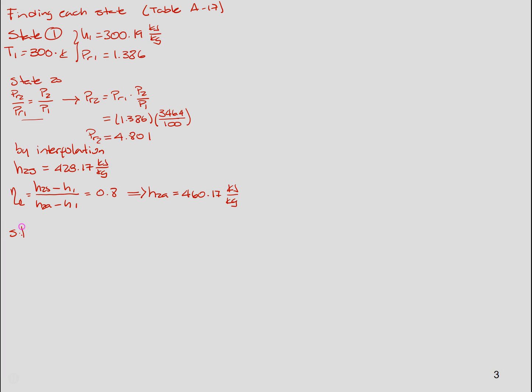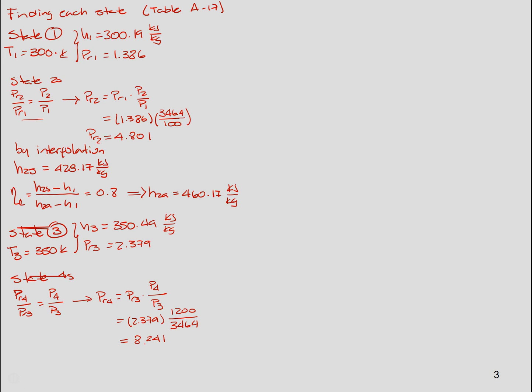Repeating this for state 3, we know the temperature T3 is 350K, so h3 equals 350.49 kilojoules per kilogram and PR3 is 2.379, no units remember. So now we're going to find out state 4s. And to do that again, we'll start with our isentropic relation. Using the same isentropic relation, we get a value of PR4 of 8.241.